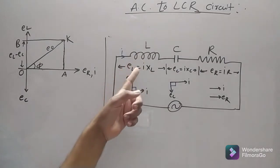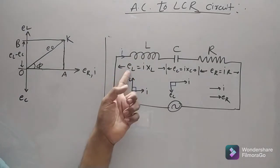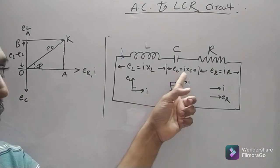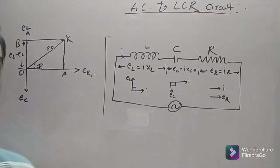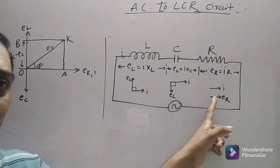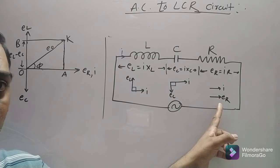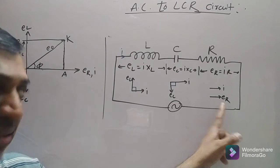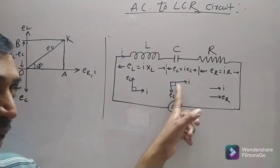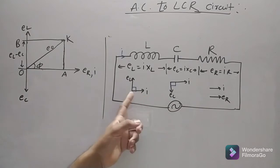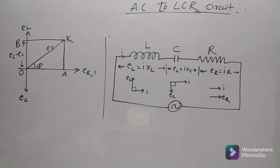The voltage drop across the inductor is VL = i·XL, across the capacitor is VC = i·XC, and across the resistor is VR = i·R, by Ohm's law. In a resistor, current and voltage are in the same phase. In a capacitor, current leads the EMF by 90 degrees (π/2 radians). In an inductor, the EMF leads the current by π/2 (90 degrees).